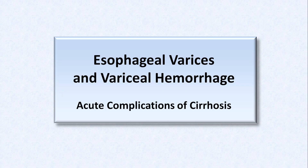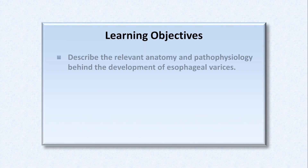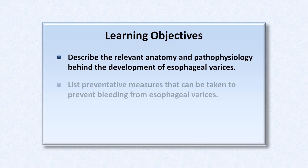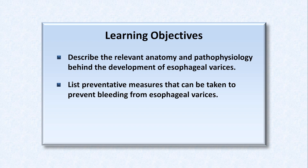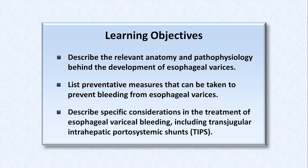Today, I'll be talking about esophageal varices and the general management of acute GI hemorrhage in cirrhosis. By the end of the video, you'll be able to describe the relevant anatomy and pathophysiology behind the development of esophageal varices, list preventative measures to prevent bleeding from esophageal varices, and describe specific considerations in the treatment of variceal bleeding, including transjugular intrahepatic portosystemic shunts, better known as TIPS.